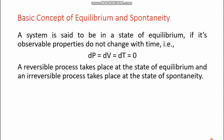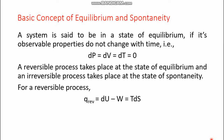A reversible process takes place at the state of equilibrium and an irreversible process takes place at the state of spontaneity. For a reversible process, the first law gives Q_rev = dU - W and the second law gives Q_rev = TdS. If the heat change is irreversible, then Q_irrev = dU - W, but this is less than TdS, which is known as the Clausius inequality.